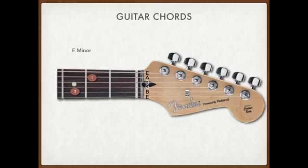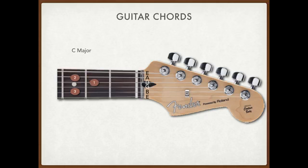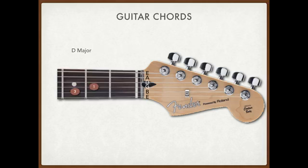E minor. Check this out: G major, E minor — they're really close to each other. C major — look at this. Let's go back to G major. See where your two and your one are? You're just moving them down. We're keeping the three there for all these chords. And look at D — same thing, you're just moving your one finger all the way down to the G string on the second fret. The one finger is always in the same fret for these chords.